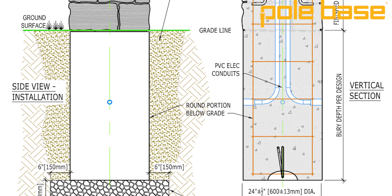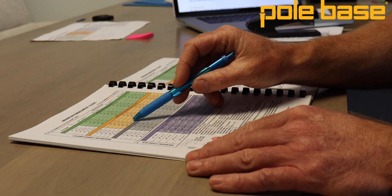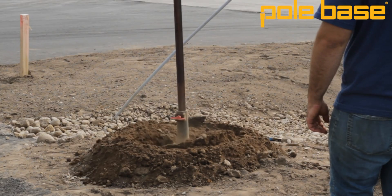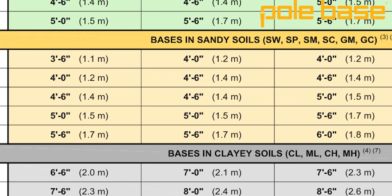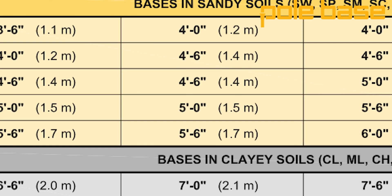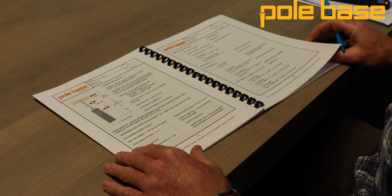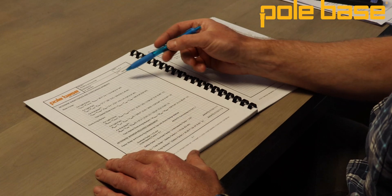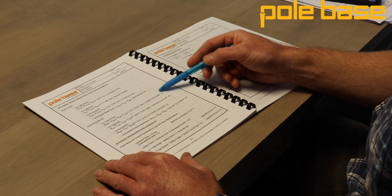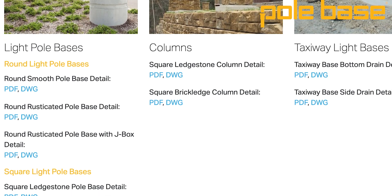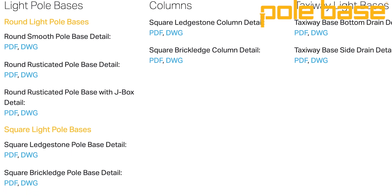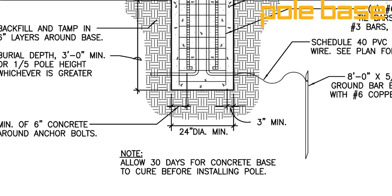As an example, a 24-inch diameter round light pole base with a 30-foot pole that has a fixture area of four square feet, placed in sandy soil with an assumed 90 mile per hour wind load, would have a five-foot embedment. We provide example calculations that can help you understand how the design charts were developed and make it easy for you to run your own analysis with your specific site conditions. Once you've locked down the size of your foundations, you can go to our website and download PDF and CAD details and then drop them right into your plans and replace your old generic cast-in-place base details.